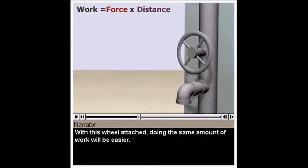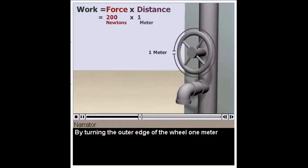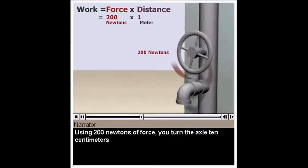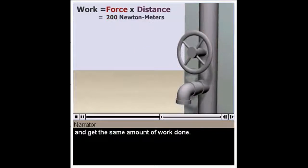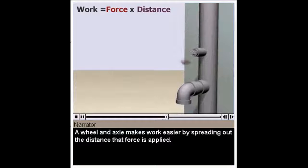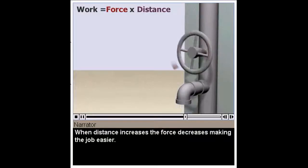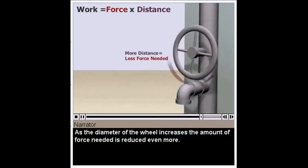With this wheel attached, doing the same amount of work will be easier. By turning the outer edge of the wheel one meter, using 200 newtons of force, you turn the axle 10 centimeters and get the same amount of work done. A wheel and axle makes work easier by spreading out the distance that force is applied. When distance increases, the force decreases, making the job easier. As the diameter of the wheel increases, the amount of force needed is reduced even more.